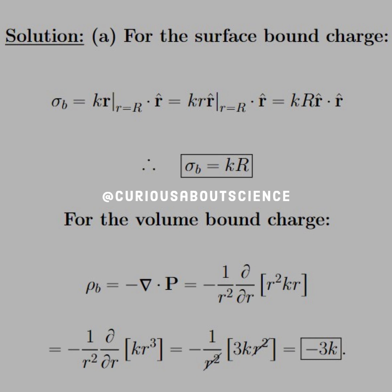For the volume bound charge, we have to go back to our notes on the spherical divergence. All we need is the radial component, since that's what's given to us. The theta and phi components don't compute here. So the radial component is 1 over r squared, partial with respect to r, times r squared times kr. That simplifies down pretty quick, and we're just left with a volume bound charge of negative 3k.